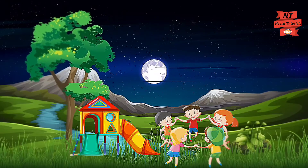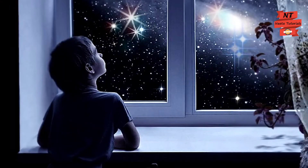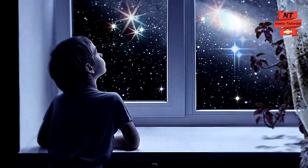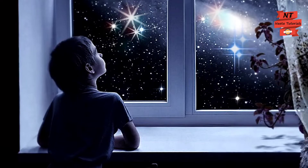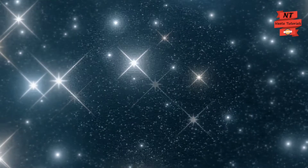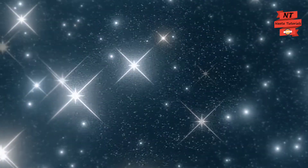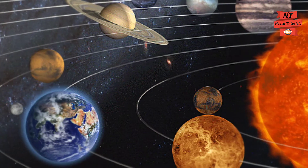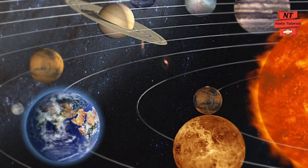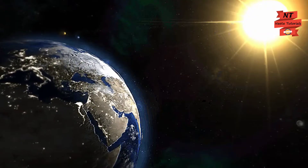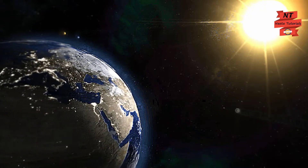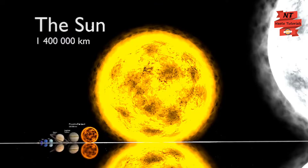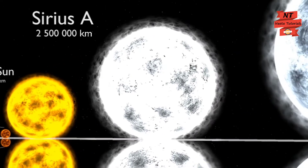Hello dear students. You must have seen lots of shining objects in the night sky. Among these, most of the tiny objects twinkle, and these twinkling objects are called stars. The Sun is also a star — it looks so different from the other stars because it is closest to our Earth, hence it appears to be very big.